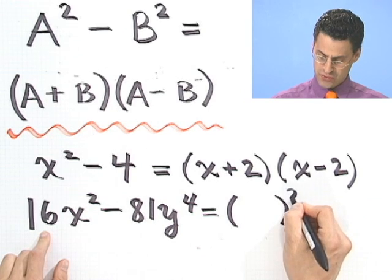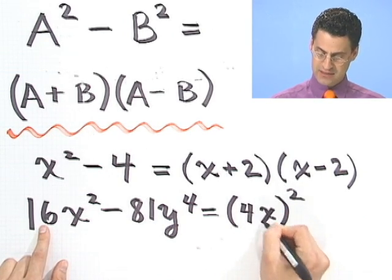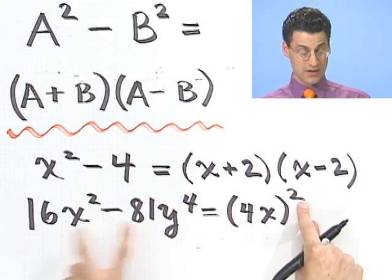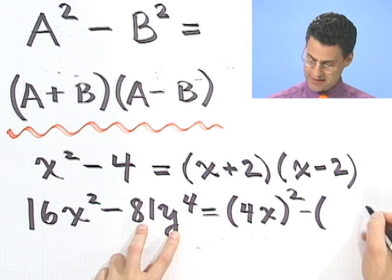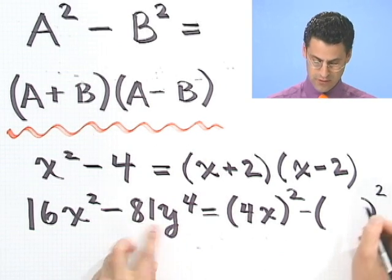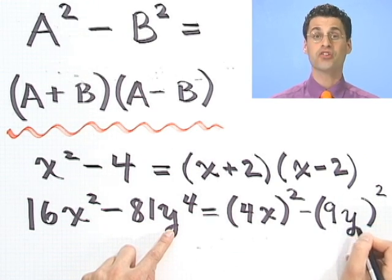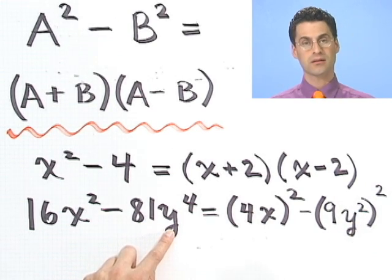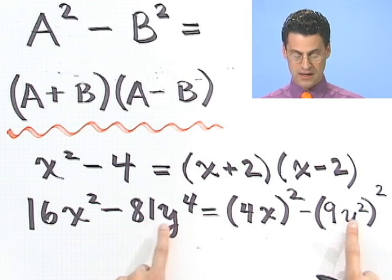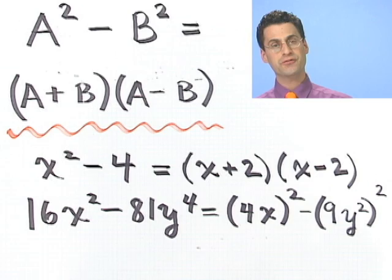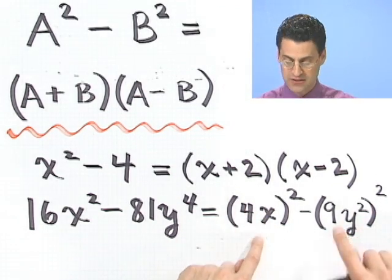This is going to be something squared. What would it be? Well, here I'd need a 4, and here I'd need an x. Notice that 4x squared is 16x squared minus, now what kind of square is this thing? Well, that would be 9 squared multiplied by y squared. And notice that if you actually square this thing, I get an 81 and a y to the fourth. So this really is the difference of two perfect squares, and these are the values that are going to appear inside the factorization.